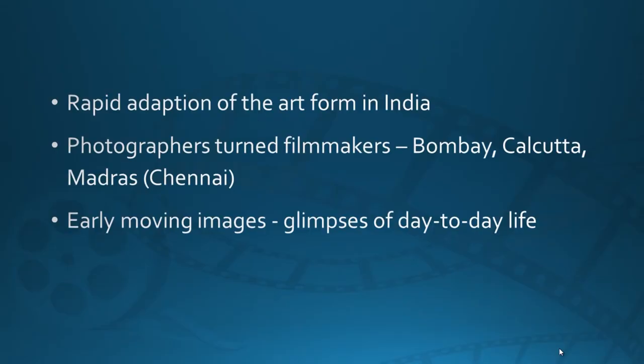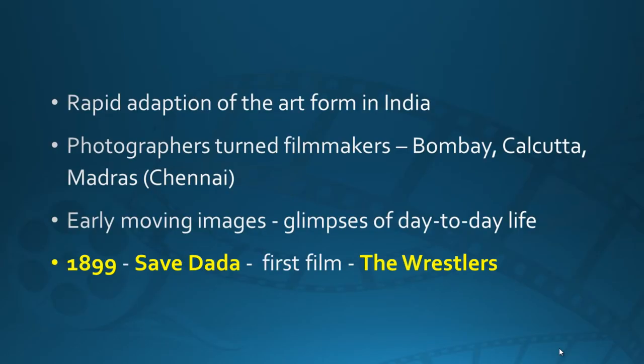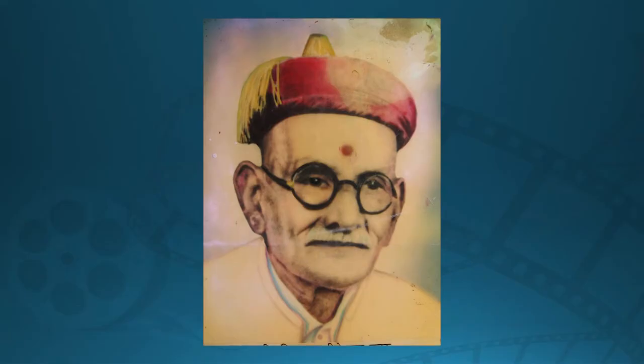The early moving images, as with other countries, were nothing but day-to-day glimpses of life. The first film in Indian cinema is an 1899 film known as The Wrestlers, produced by Saavedada. That film was simply two wrestlers wrestling — a small actuality, just as we have talked about in the context of the beginnings of world cinema. That was the first film.